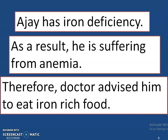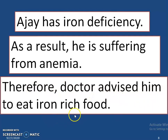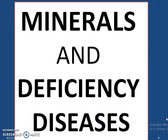From this small case study, we come to know that Ajay has iron deficiency. Iron is a mineral, so he has mineral deficiency. As a result, he is suffering from anemia, which is a mineral deficiency disease. Therefore, the doctor advised him to eat iron-rich food, for example, spinach, green vegetables, chickpeas, etc.